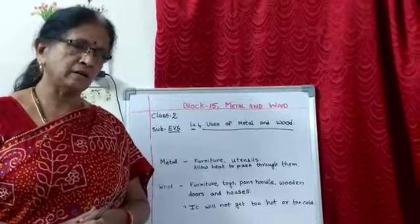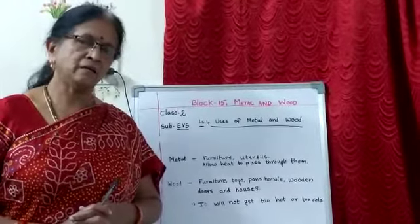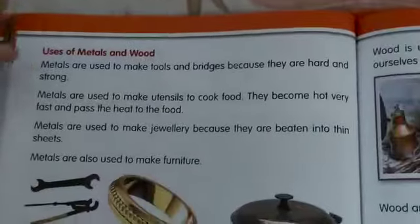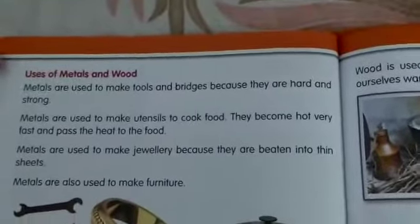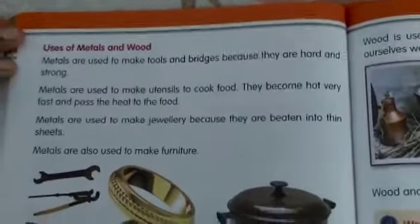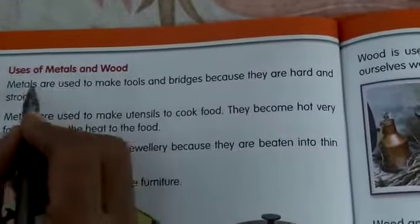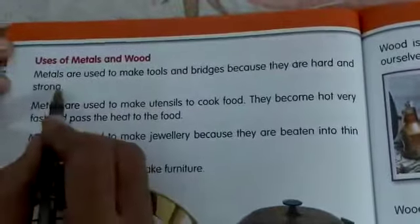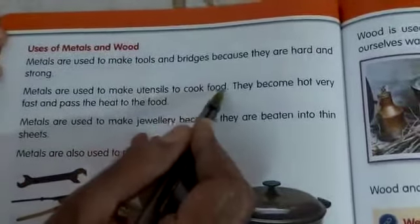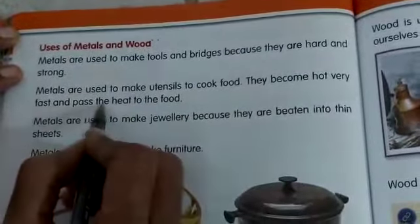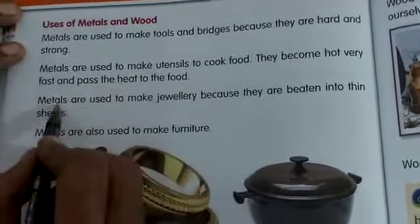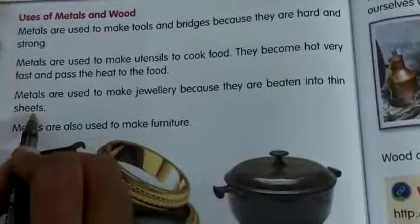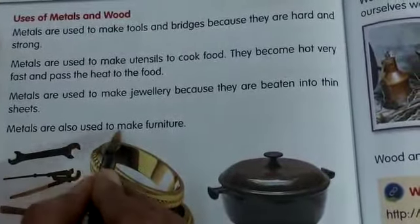So many things we learned in this lesson. Now, we will read from the EBS reader. All of you take out your EBS reader and open page number 96: Uses of Metal and Wood. Metals are used to make tools and bridges because they are hard and strong. Metals are used to make utensils to cook food — they become hot very fast and pass the heat to the food. Metals are used to make jewelry because they can be beaten into thin sheets. Metals are also used to make furniture.